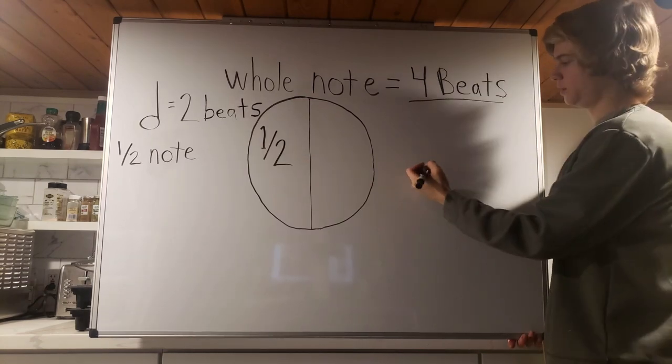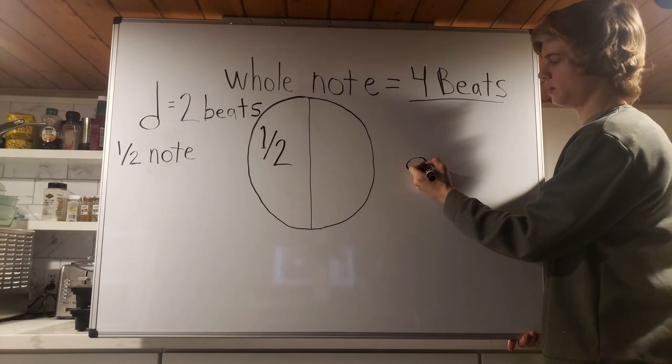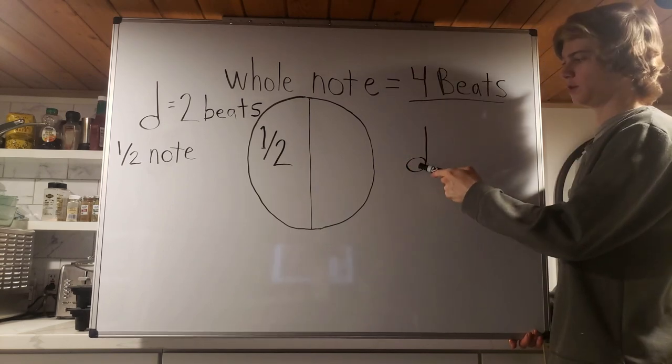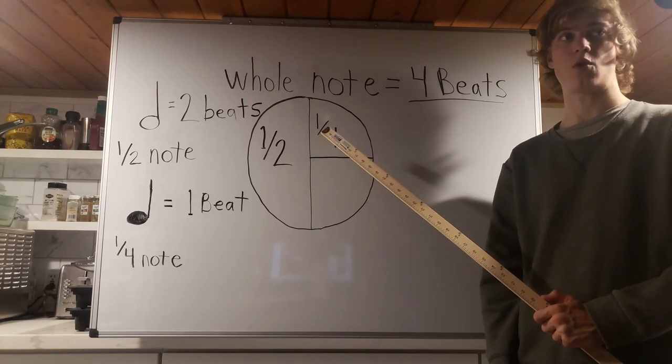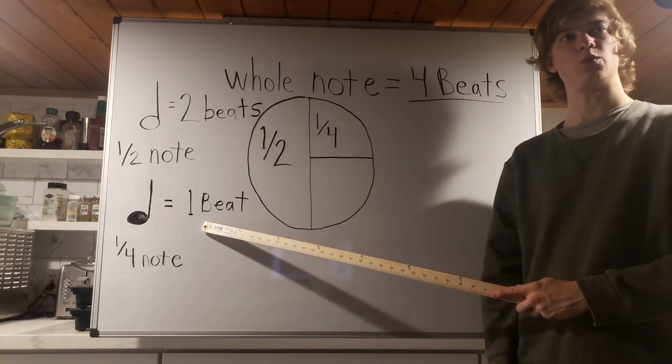To draw a note, simply draw a circle and then draw a line going up. And you don't color it in for the half note. If we cut our half note in half, we get a quarter note. Half of two beats is one beat.